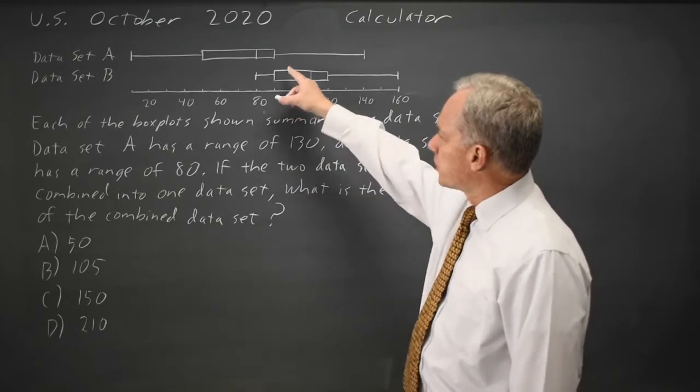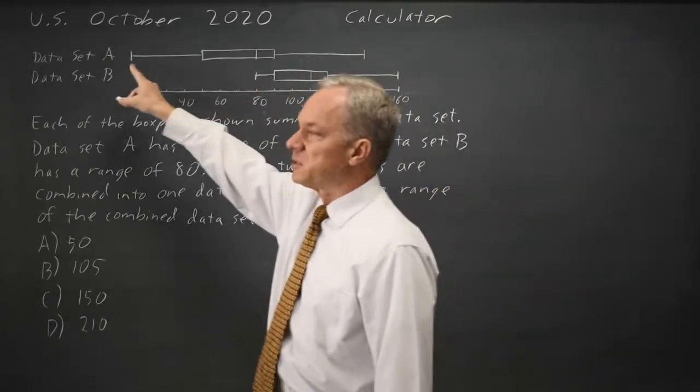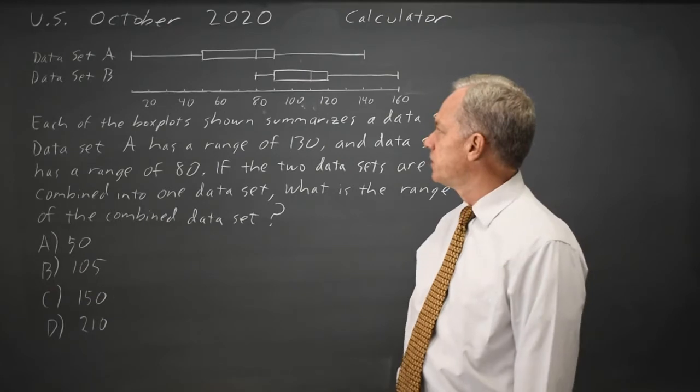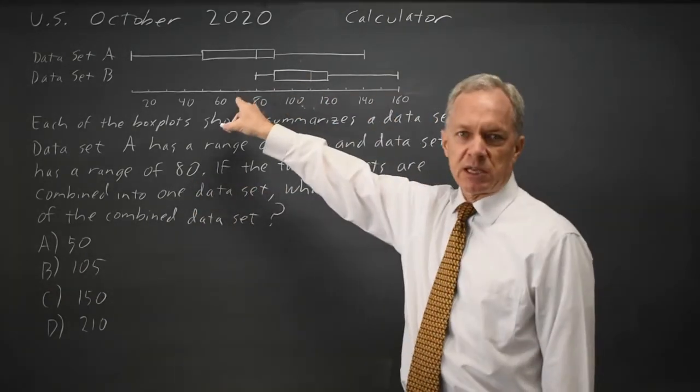They tell us the range of data set A is 130, which we can see: the maximum is 140 and the minimum is 10, so 140 minus 10 is 130. That's the range. Data set B has a range of 80, maximum is 160, minimum is 80.